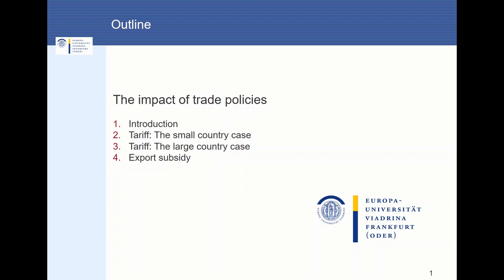This pattern will change when it comes to trade policy — these steps are reversed. In trade policy, in a first step, we look at what happens if the economy is allowed to trade freely. Afterwards, we insert some trade restrictions, for example, a tariff or an export subsidy. We want to know how the introduction of a tariff or an export subsidy affects the welfare of the economy, and how it affects the different groups within one economy.